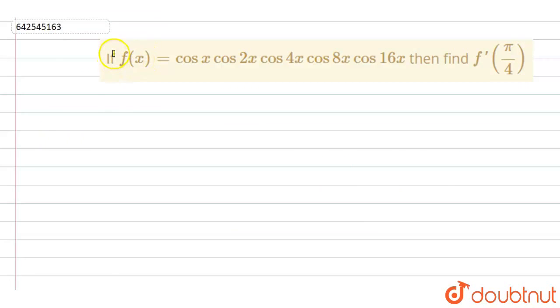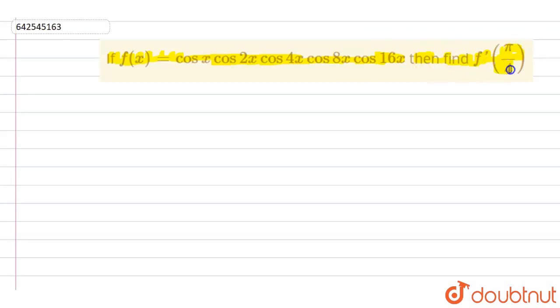Hello everyone. So the question is: if f(x) is equal to cos x · cos 2x · cos 4x · cos 8x · cos 16x, then find f'(π/4).